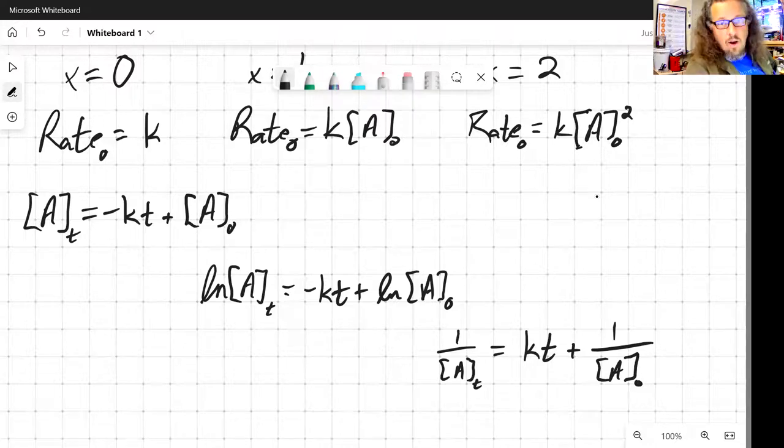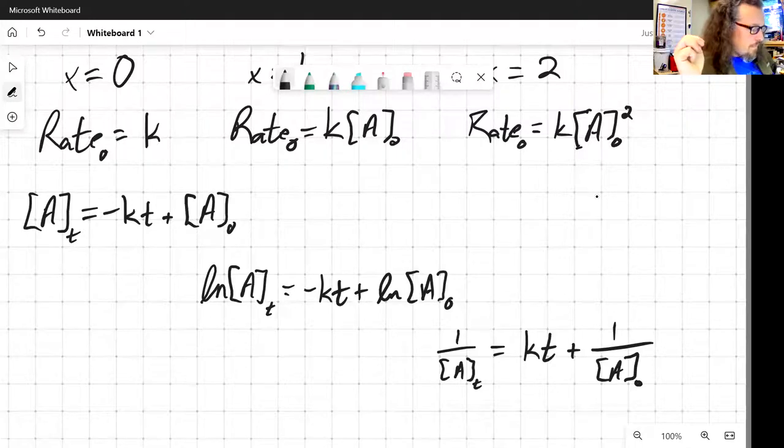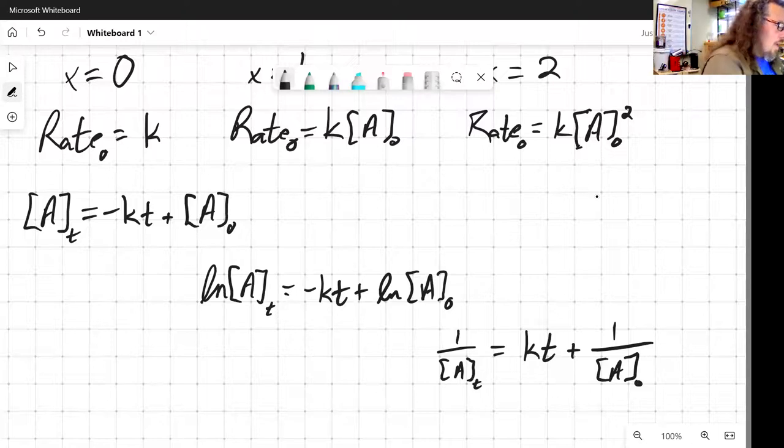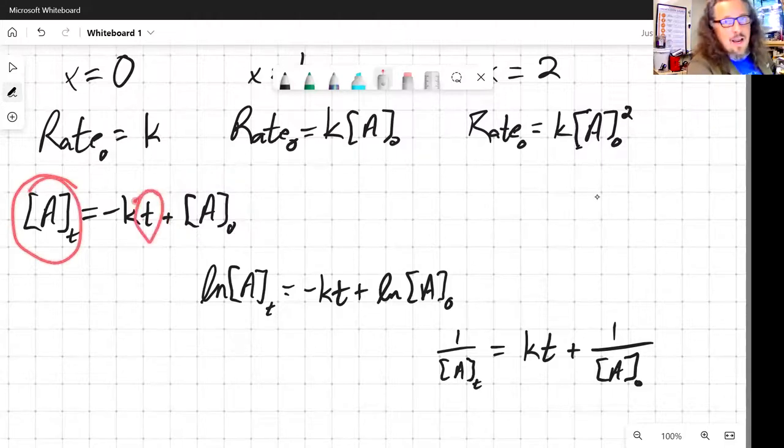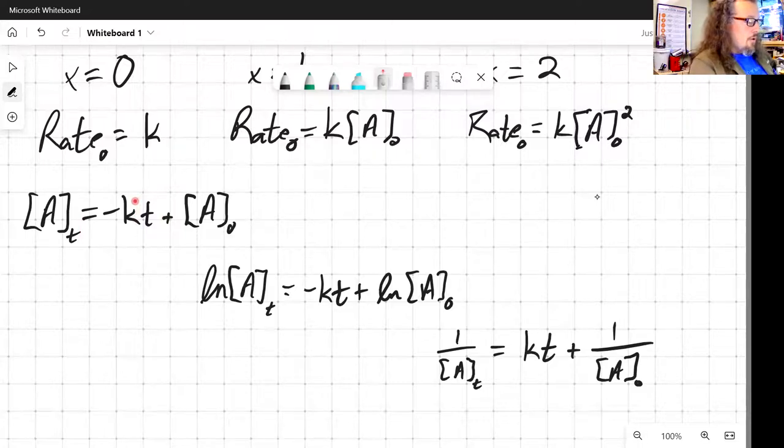So now we've got three different integrated rate laws and those three integrated rate laws give us a way to relate initial concentration, final concentration, and the time that we're doing the reaction. The only deal with these is you have to know which form you're using. You have to know whether something is zeroth, first, or second order in order to choose the right rate law.